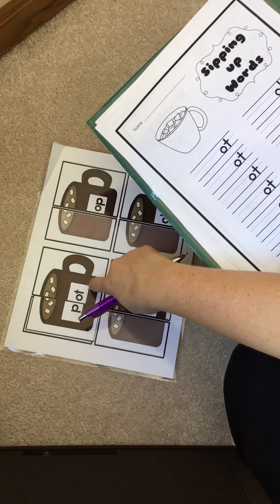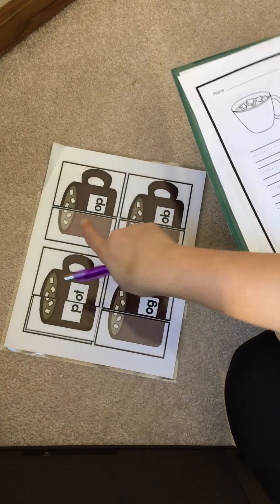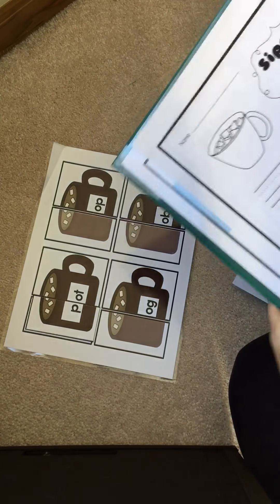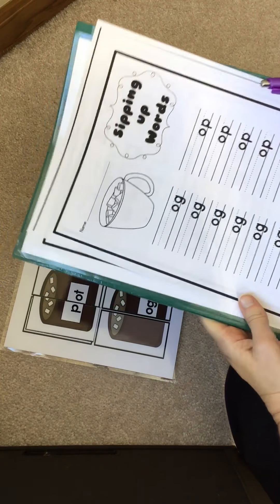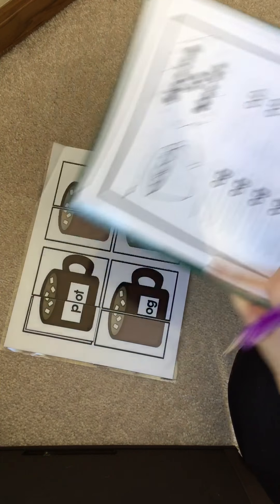And then on the back, this is where the 'og' words will go and where all the 'op' words will go. All right, so this is an 'ot' word, O-T, so I'm gonna put it here.